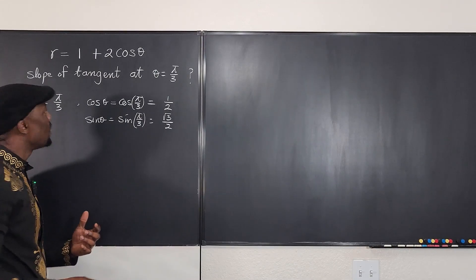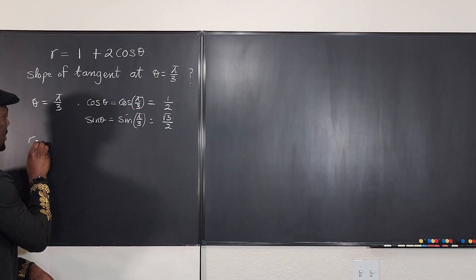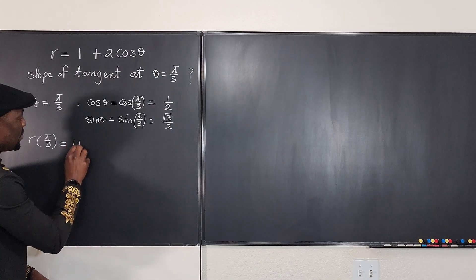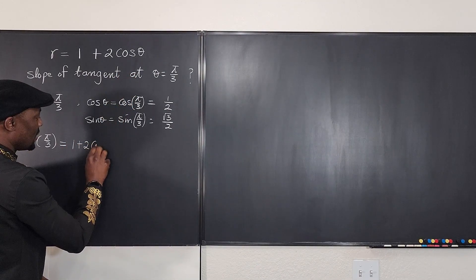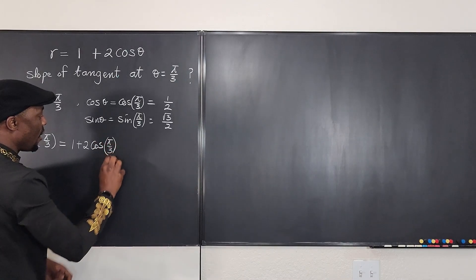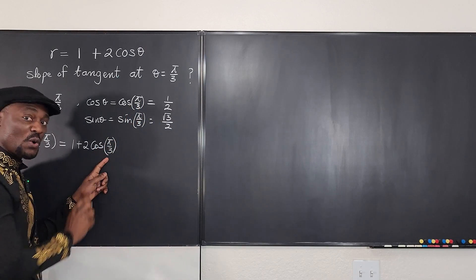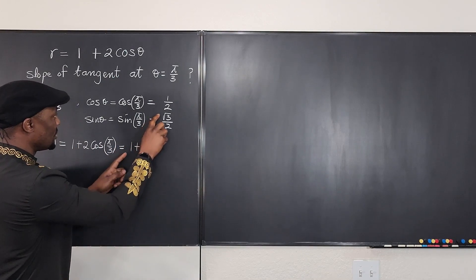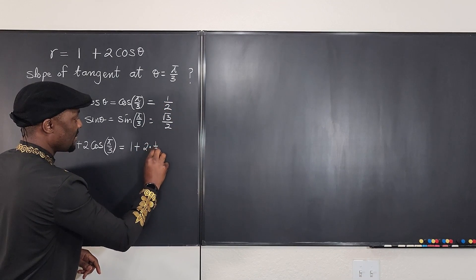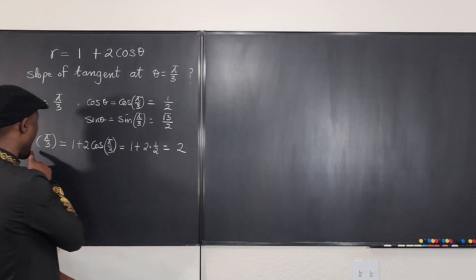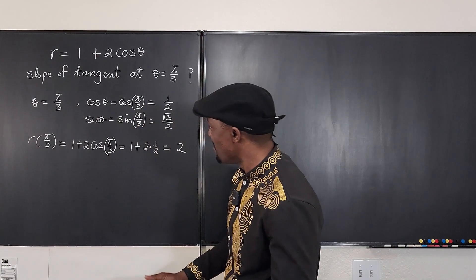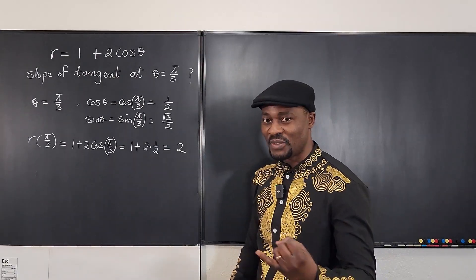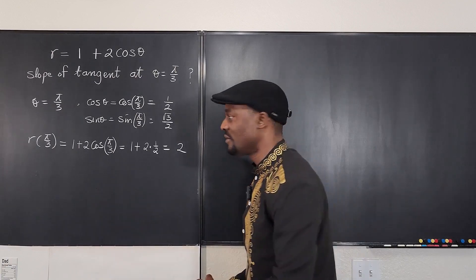What else do you need to know? You need to know what r is. So what is r evaluated at pi over 3? This is going to be equal to 1 plus 2 times cosine of pi over 3. I already know what cosine of pi over 3 is, so that means 1 plus 2 times one half, which is 1 plus 1, which equals 2. So now I know what r is at pi over 3. These are the most important things you want to know: theta, sine theta, cosine theta, and r.